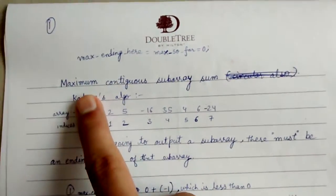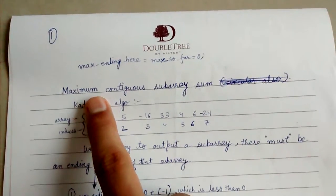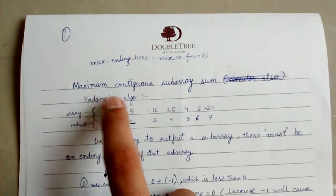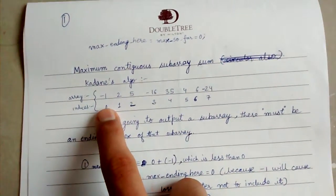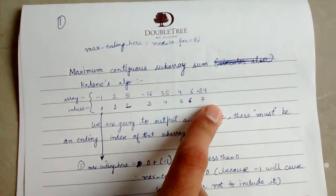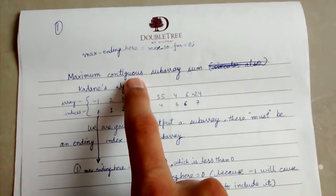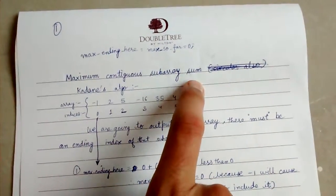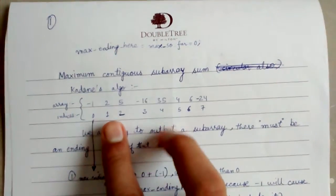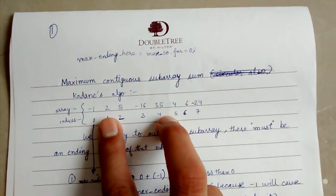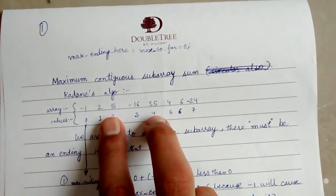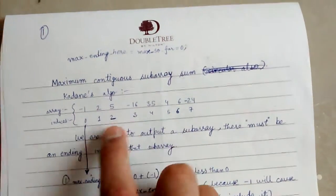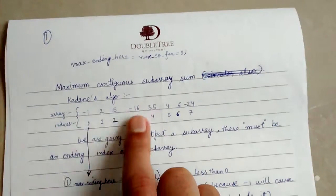Today we will discuss another example of dynamic programming: the maximum contiguous subarray sum problem. We are given an array with indices 0 through 7, and we want to find the maximum contiguous subarray sum. We take sums of contiguous subarrays — contiguous means all continuous elements with no breaks in between, like indices 2, 3, 4 but not 2 and 4 skipping 3.